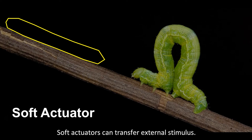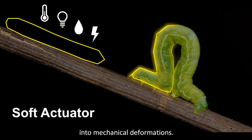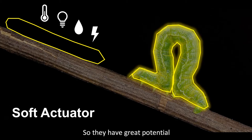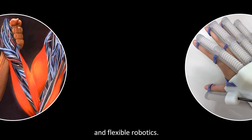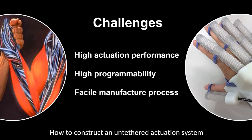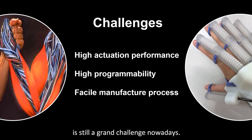Soft actuators can transfer external stimuli such as heat, light, moisture, and electricity into mechanical deformations. So they have great potential in developing artificial muscles and flexible robotics. How to construct an untethered actuation system with high actuation performance and high programmability in a feasible way is still a grand challenge nowadays.